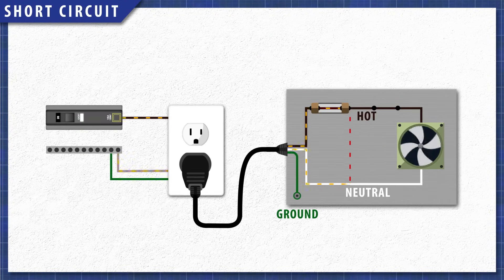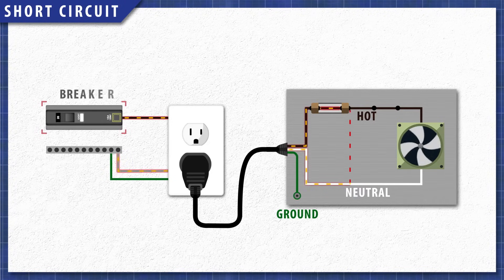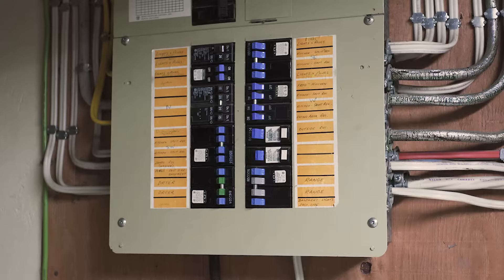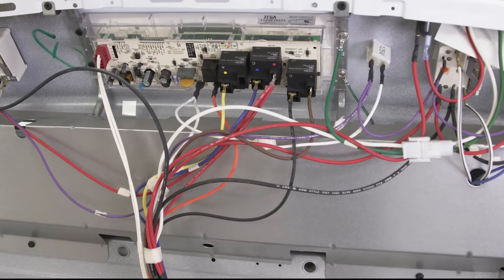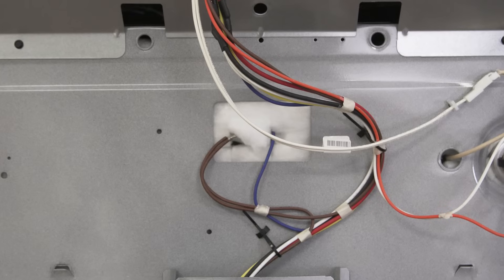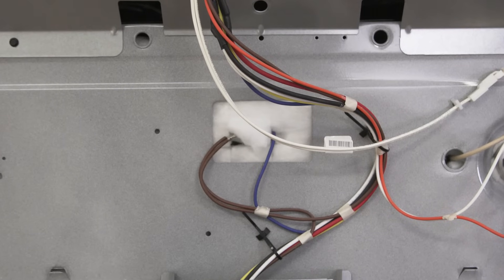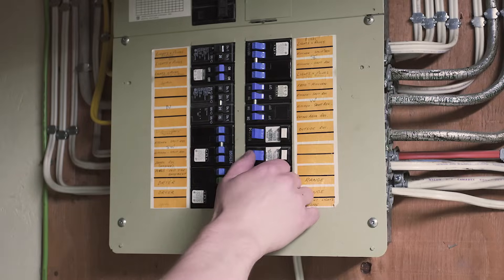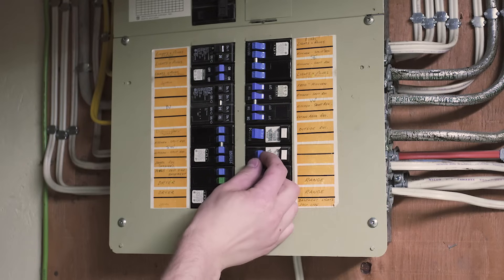In a protected circuit, the extra current will trip the circuit breaker or will blow the fuse. Now if an appliance keeps tripping the breaker, then it's likely that there's an internal short. In this case, you'll have to locate and repair the damaged wires or component. Then the breaker must be reset or the fuse replaced.